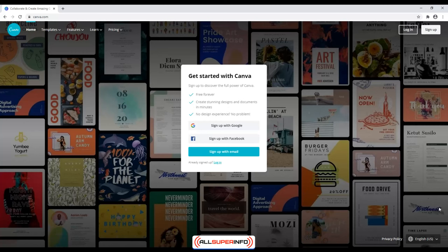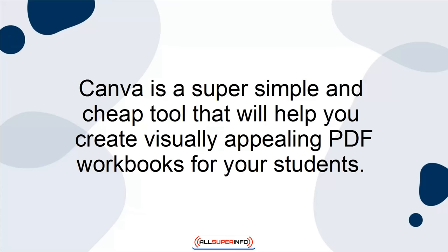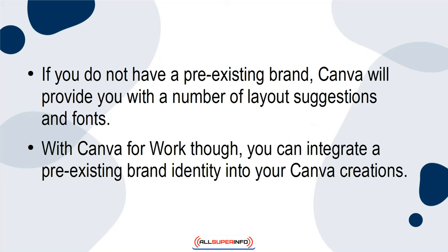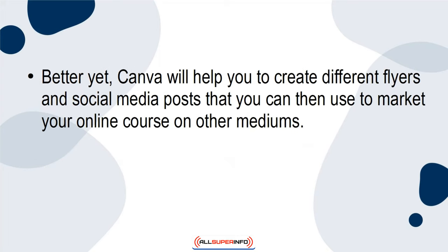Canva. One of the best tools to help you upgrade your online course is Canva. Canva is a super simple and cheap tool that will help you create visually appealing PDF workbooks for your students. If you do not have a pre-existing brand, Canva will provide you with a number of layout suggestions and fonts. With Canva for Work, you can integrate a pre-existing brand identity into your Canva creations.